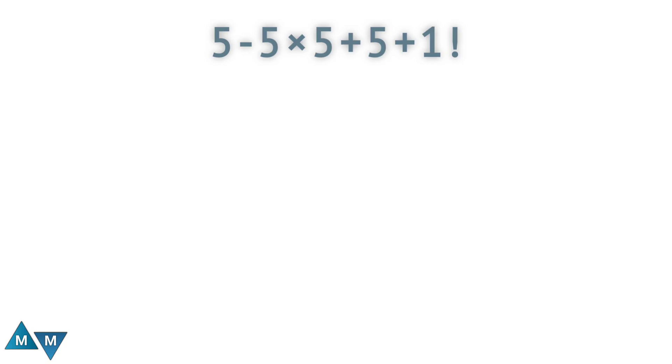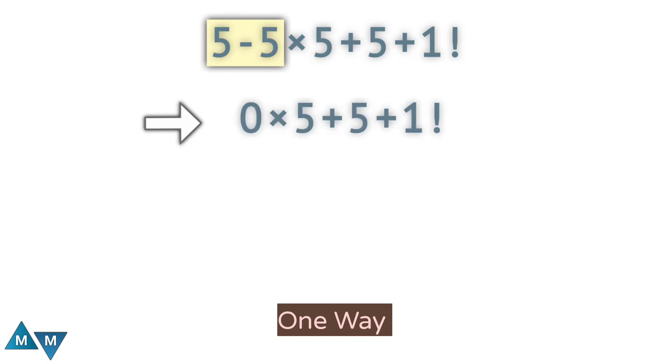We've seen a lot of people do it the following way. Look at 5 minus 5 is 0, right? It's going to be 0 times 5 plus 5 plus 1 factorial.